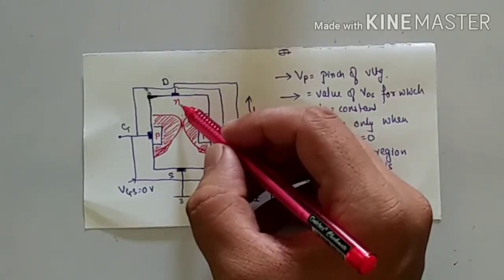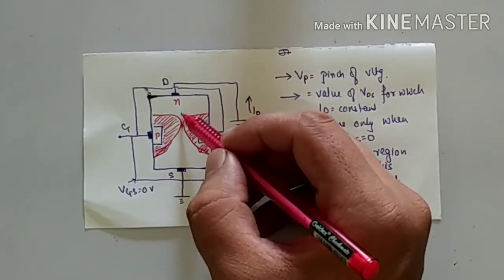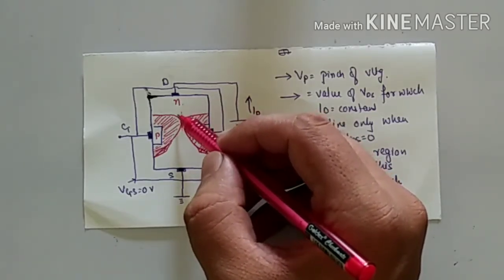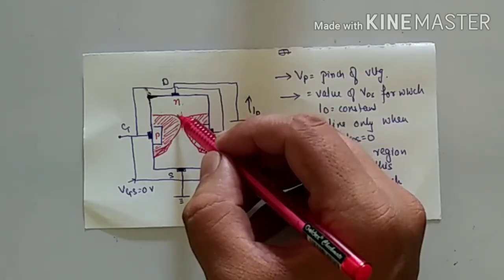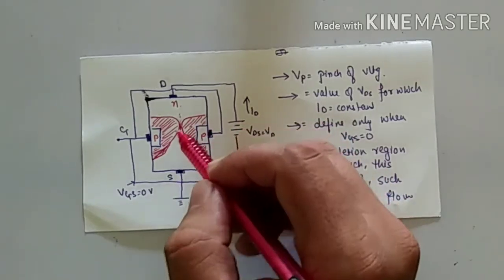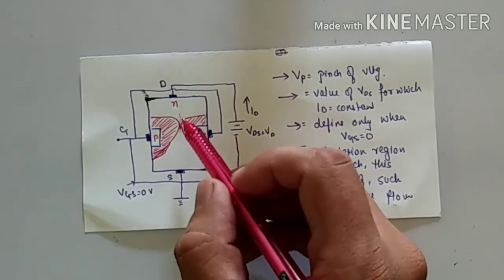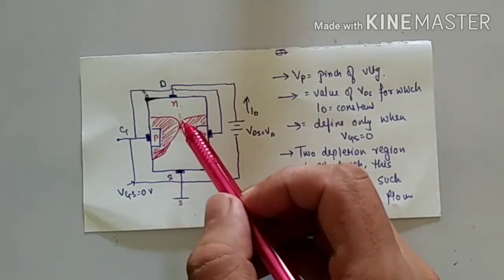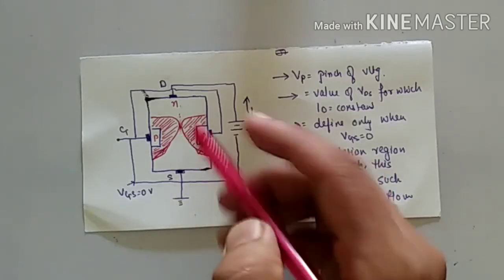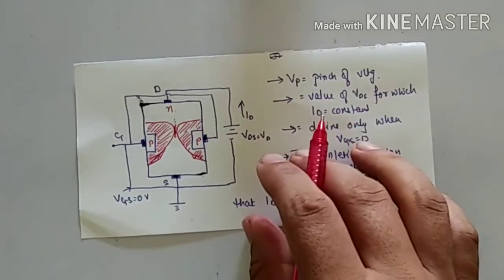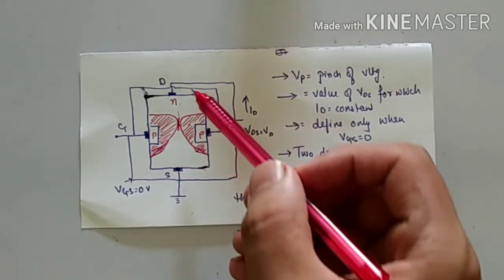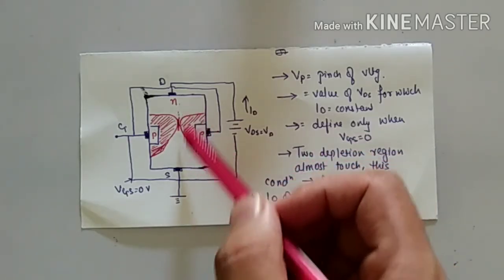When the current will flow from here, take the example of one electron. One electron will flow from this narrow part. There is no space to move two or three electrons — only one electron will pass from this narrow part. There is no condition for two electrons or three electrons to move. So we can say that only a constant number of electrons will flow, or we can say constant current will flow from this narrow path.